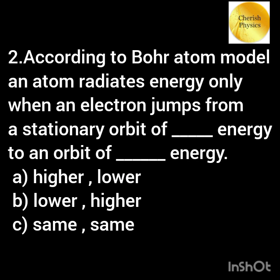According to Bohr atom model, an atom radiates energy only when an electron jumps from a stationary orbit of dash energy to an orbit of dash energy.